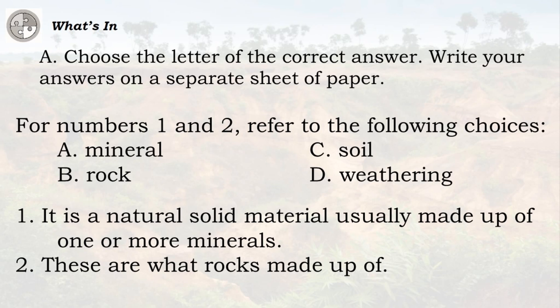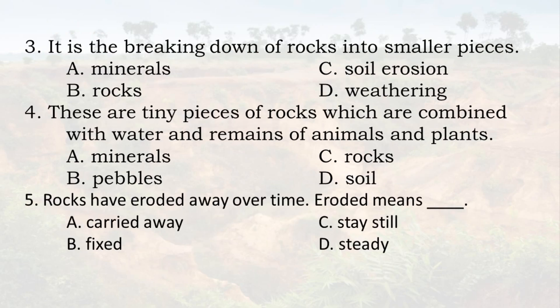It is a natural solid material usually made up of one or more minerals. These are what rocks are made up of. It is the breaking down of rocks into smaller pieces. A. Minerals, B. Rocks, C. Soil Erosion, D. Weathering.